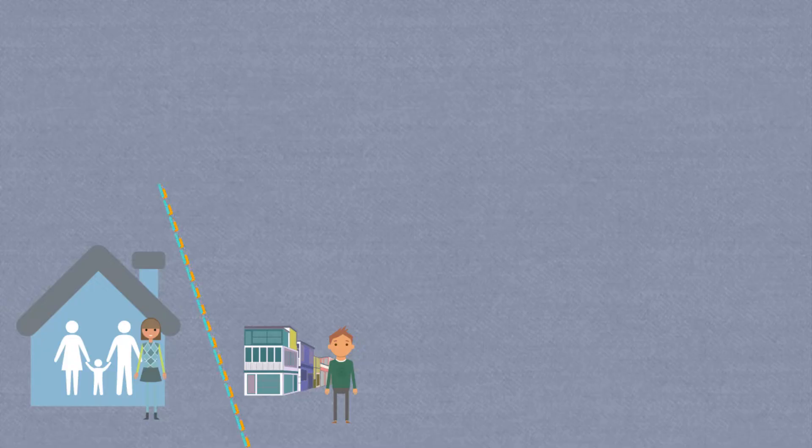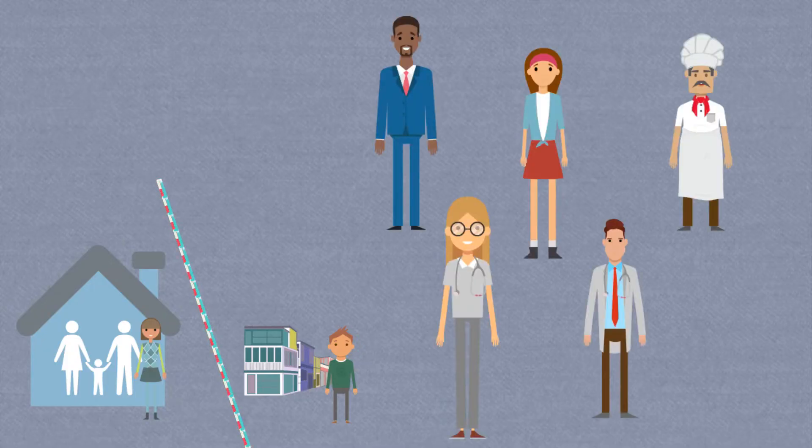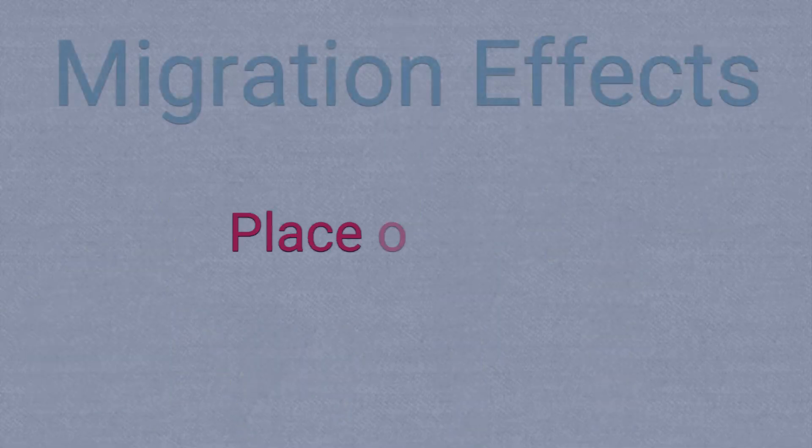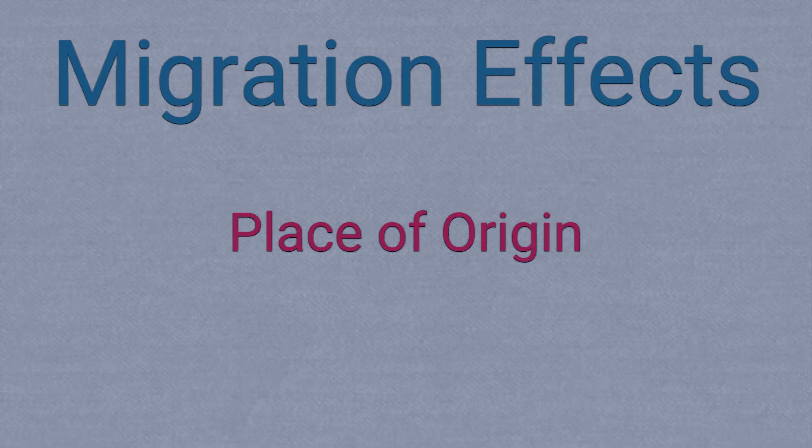However, when migration occurs, there is a ripple effect that affects people who are not involved in migration. In this video, we're going to focus on some of these effects in migrant origin locations or countries, that is, the places where migrants come from.